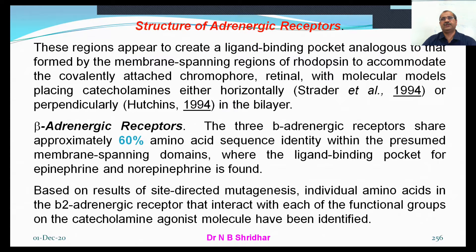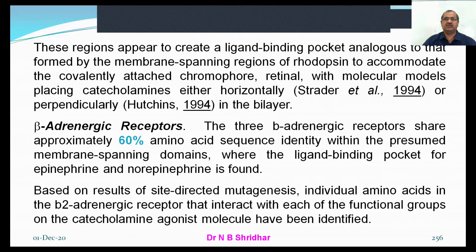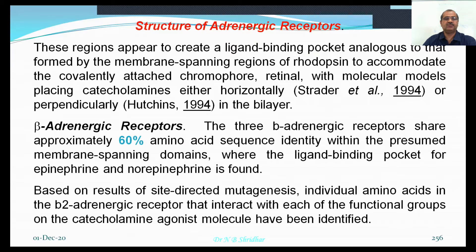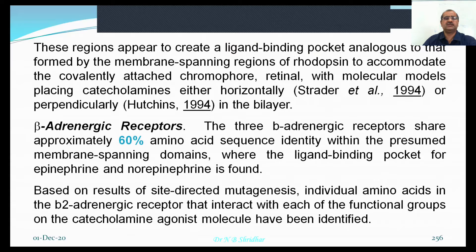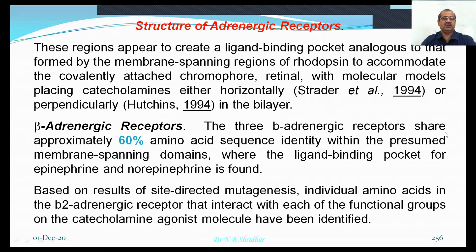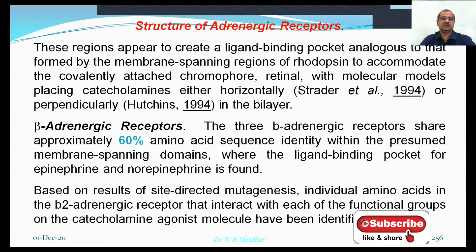Let us look at structure-activity relationships. The regions appear to create the ligand binding pocket, analogous to that formed by the membrane spanning regions of the rhodopsin protein, which accommodates the covalently attached chromophore retinal, with molecular models of the catecholamines. There is a ligand binding pocket on the particular receptors, and these receptors have a very specific protein structure. The three beta-adrenergic receptors share approximately 60% of amino acid sequence within the presumed membrane spanning domains. Based on results of site-directed mutagenesis, individual amino acids in the beta-2 adrenergic receptor that interact with each functional group on the catecholamine agonist molecule have been identified.